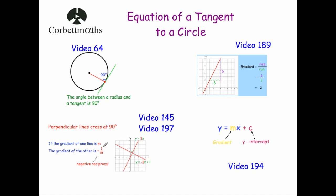Next, we need to know two things: how to find the reciprocal of a number (video 145), and how to find the gradient of a perpendicular line (video 197). For instance, if a line has a gradient of 2, the perpendicular line has a gradient of minus a half — because if the gradient is m, the perpendicular gradient is minus one over m.